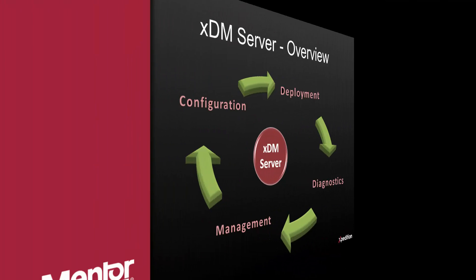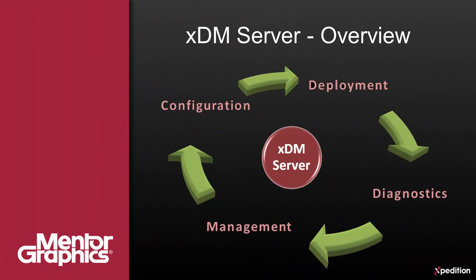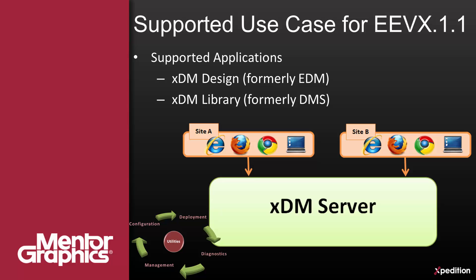The system utilities toolbox provides configuration, deployment and management utilities that help you manage your XDM server. For the initial release of VX 1.1, you deploy a central XDM server that serves the remote desktop and browser-based clients. You can choose to deploy your server on Windows or Linux. VX.1 and 1.1 applications using XDM server are XDM Design, formerly released as EDM, and XDM Library, formerly released as DMS.